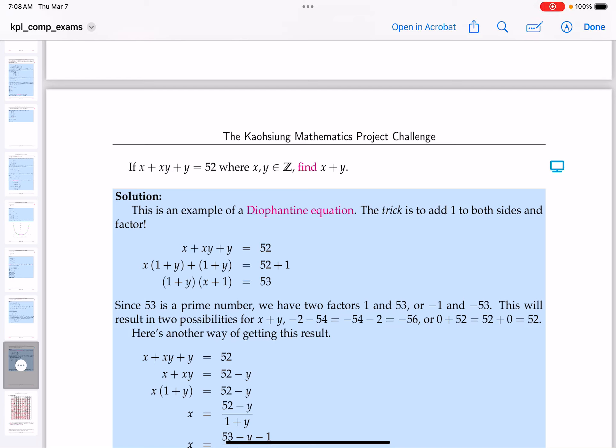Okay, this question we're given a Diophantine equation. That means x and y are integer values. It says x plus xy plus y is 52, and they do emphasize that x and y are integers.